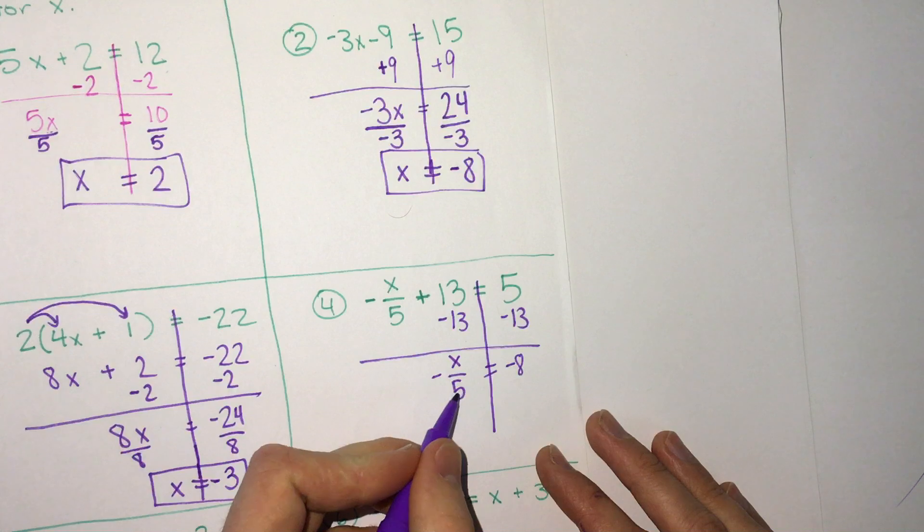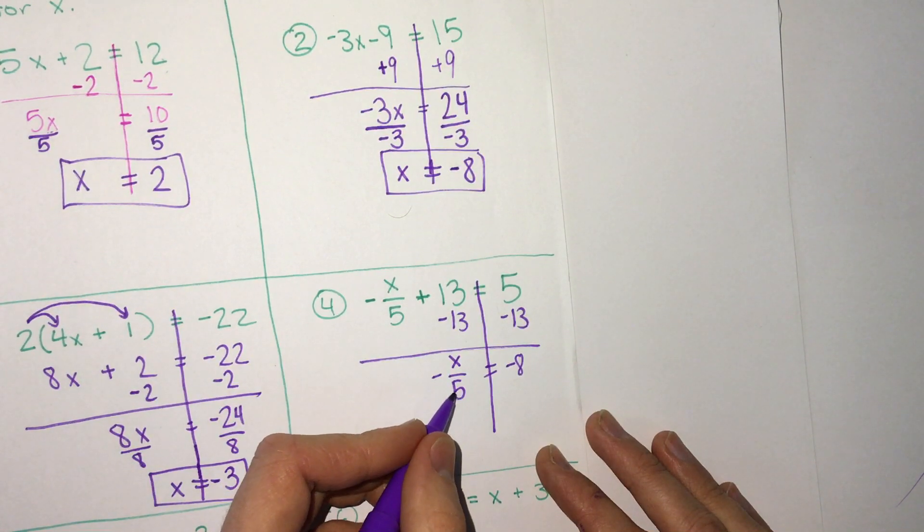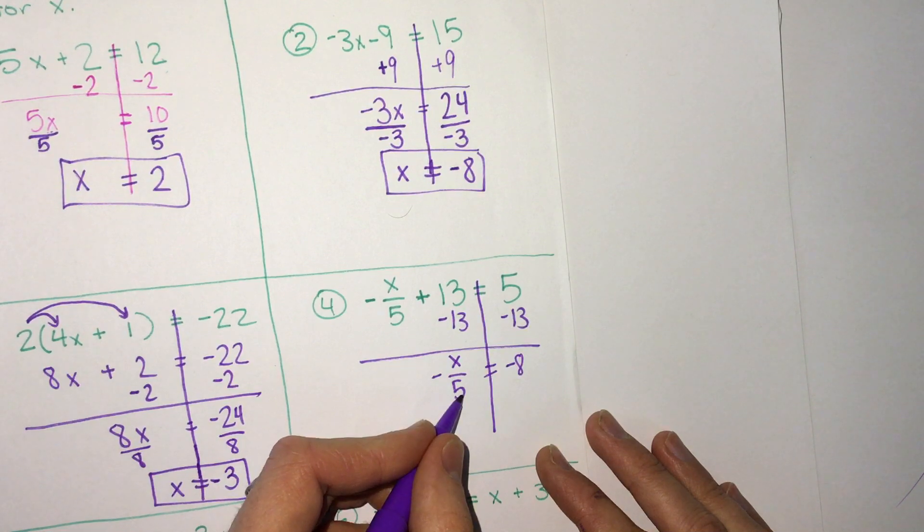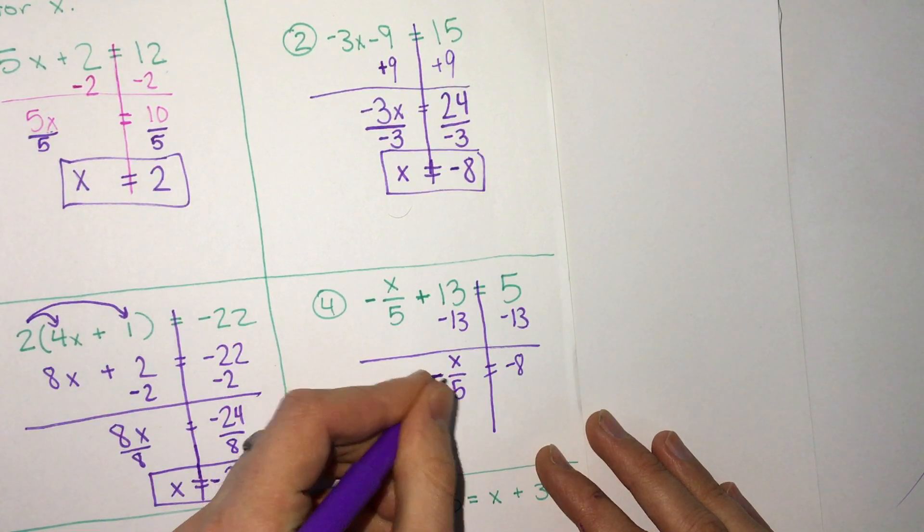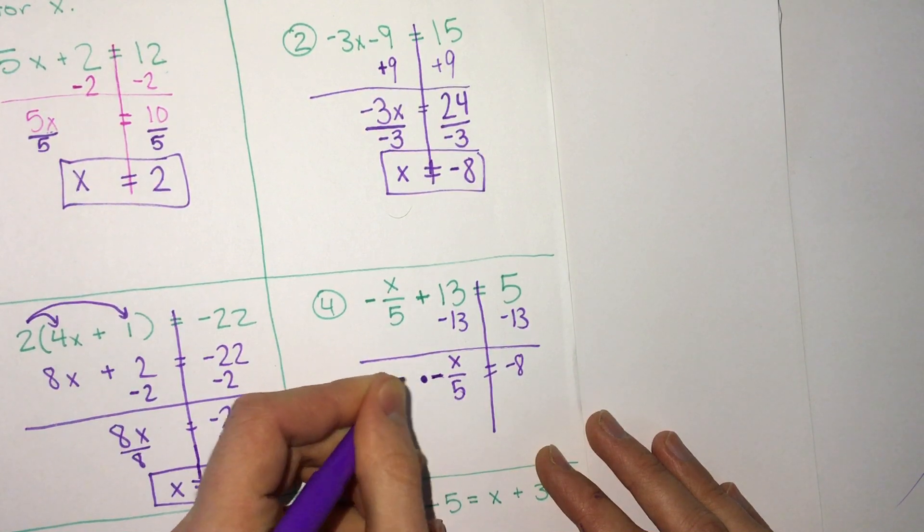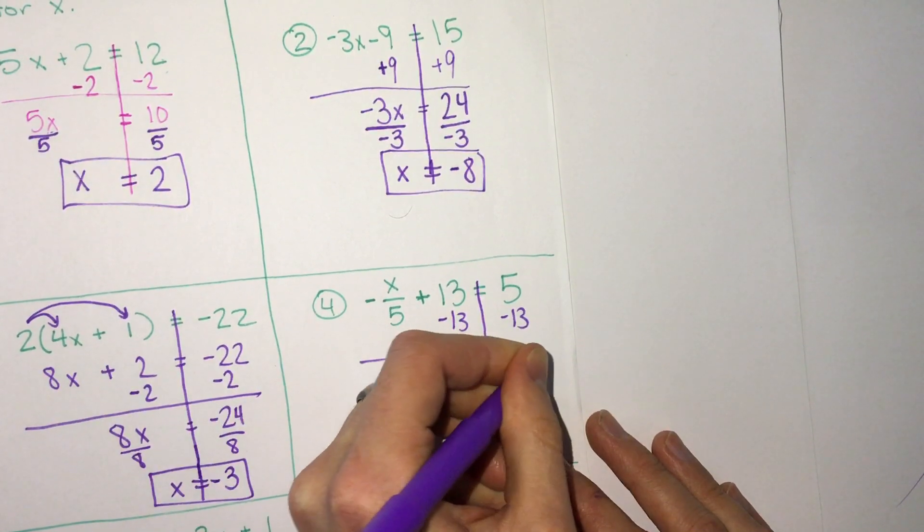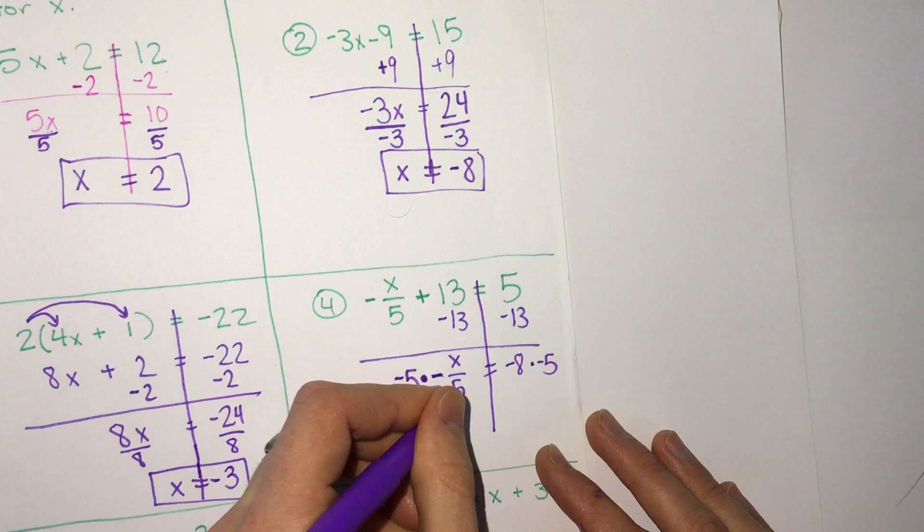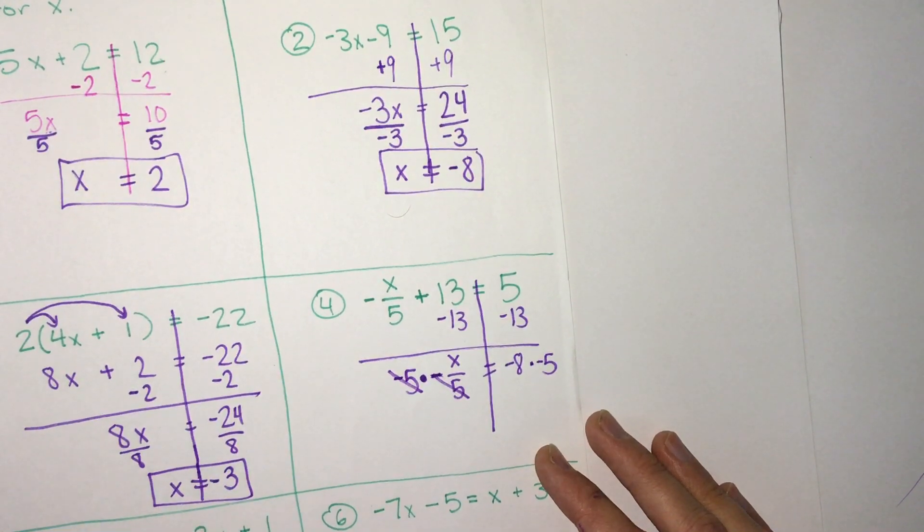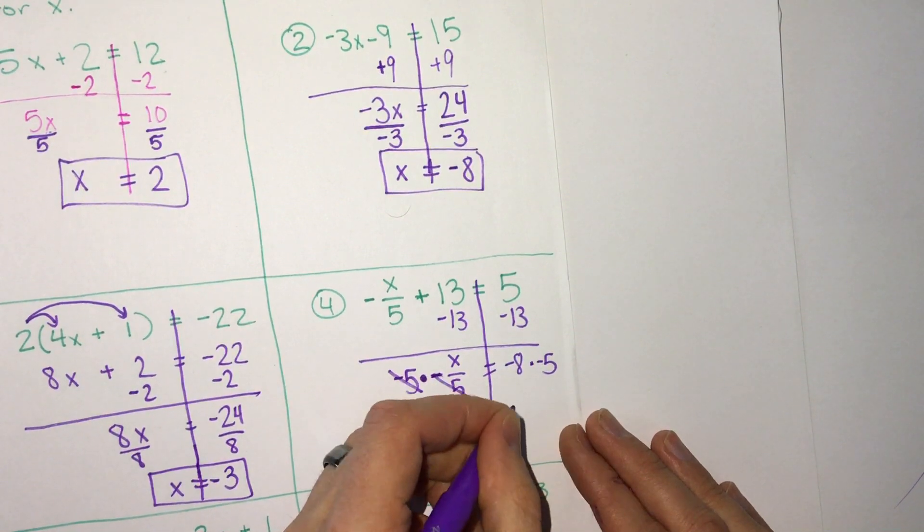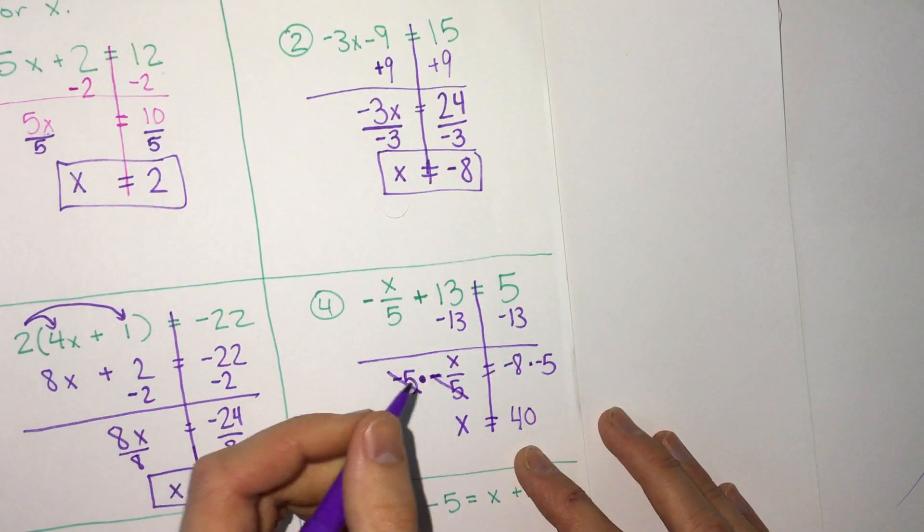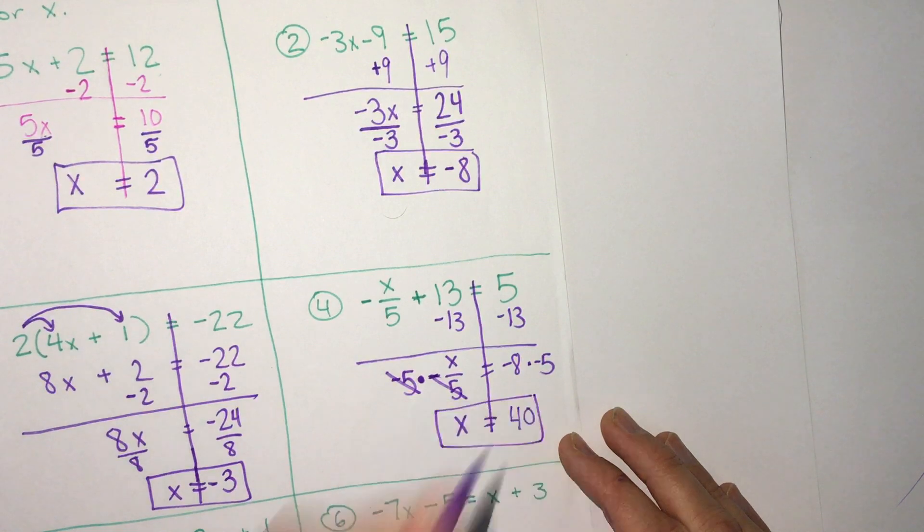Now we talked about when we have a fraction, this is division. We are dividing by negative 5. The opposite of dividing is multiplying. Now the negative is out front, but we can put it with the number. So we'll just multiply by negative 5 on both sides. Those will cancel there. So we'll be left with x. And then negative 8 times negative 5, negative times a negative is a positive, and that is 40.